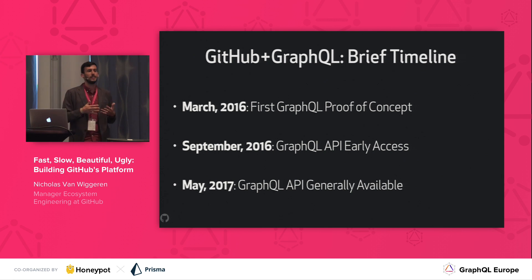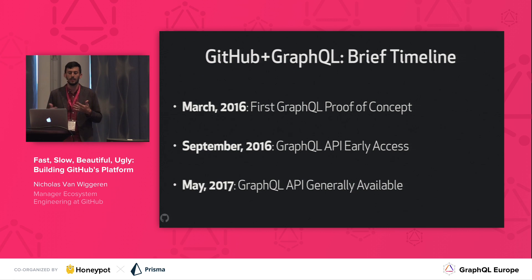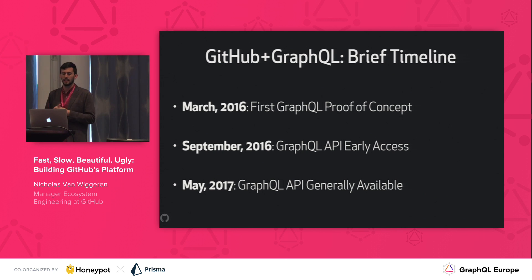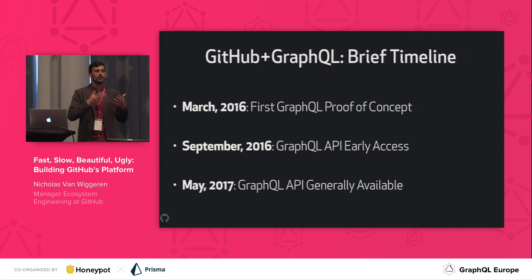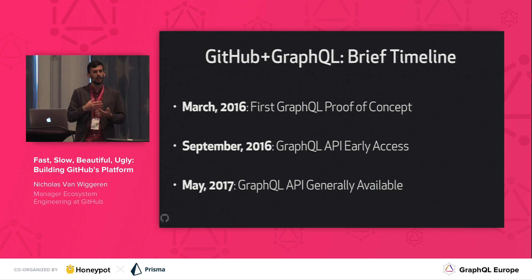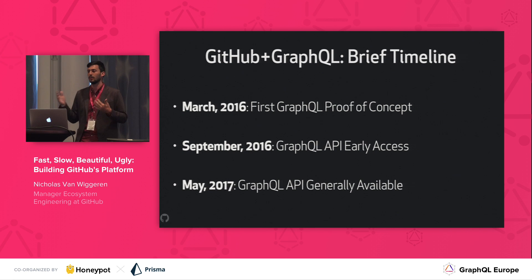We loved that GraphQL was neutral but that we could use it to model our domain. We built a very small, simple proof of concept that has never seen the light of day. We loved it so much that we kept working on it, and in September of 2016, just a few months later, we released an early access public GraphQL API. About six months after that, we said, okay, this is working, we're adding schema, everything is going well — let's bring it generally available and bring this public GraphQL API to the world.